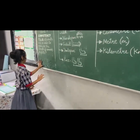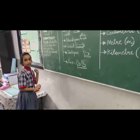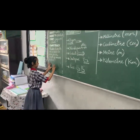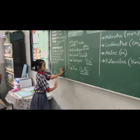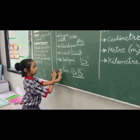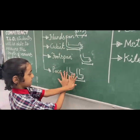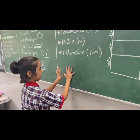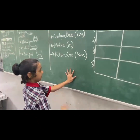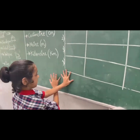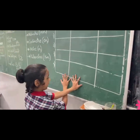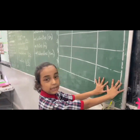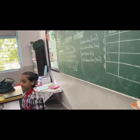Now, with the help of handspan, calculate the length of a green pole. 12, 14... 18, 16, 17, 18. So 18 handspans.